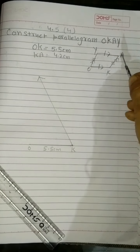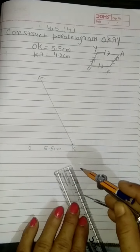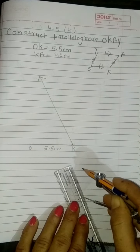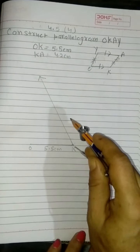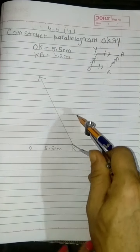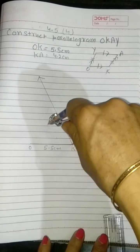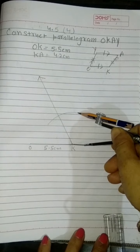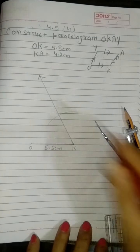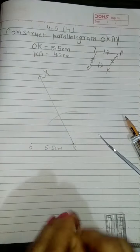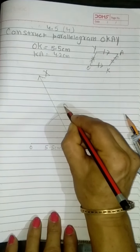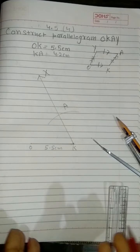But I know KA is 4.2. So I will measure here 4.2 with K as the center and 4.2 radius, draw an arc which cuts the ray, and name this point A. Now the question is...